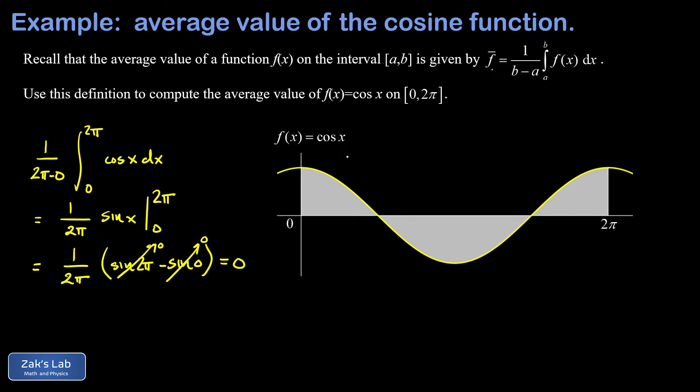So if it encloses a signed area of zero, what's the constant function that encloses the same amount of area on this interval? It's just the function f average equals zero.